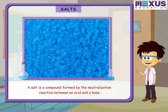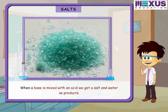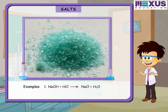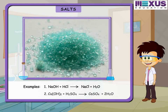A salt is a compound formed by the neutralization reaction between an acid and a base. When a base is mixed with an acid, we get a salt and water as products. For example, when sodium hydroxide is mixed with hydrochloric acid, we get sodium chloride and water. When copper hydroxide is reacted with sulfuric acid, we get copper sulfate and two molecules of water.